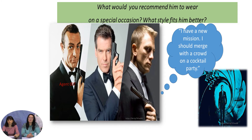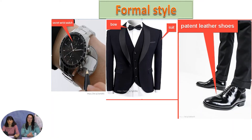What a sound! Where is it coming from? Oh, it's our telephone! Okay, understood. Can you keep secrets? Because we have a special mission. We should recommend Agent 007 what to wear to a cocktail party to match with the crowd. Take extra time and put on a pause. Probably you thought about formal style: a pair of patent leather shoes, a classic black suit with a bow, and a secret wrist watch.